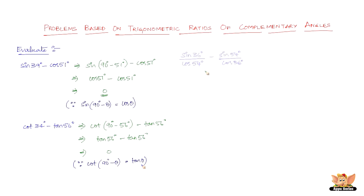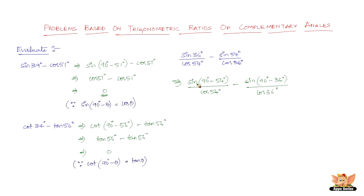Let's quickly solve another problem: evaluate sine 36 degrees divided by cos 54 degrees, minus sin 54 degrees divided by cos 36 degrees. Sine 36 can be written as sine of 90 degrees minus 54 degrees, divided by cos 54. And sin 54 can be written as sine of 90 degrees minus 36 degrees, divided by cos 36 degrees. Since sine of 90 minus theta equals cos theta, sine(90 - 54) equals cos 54, giving cos 54 over cos 54. And sine(90 - 36) equals cos 36, giving cos 36 over cos 36. So this becomes 1 minus 1, which equals 0.